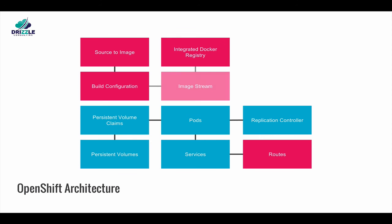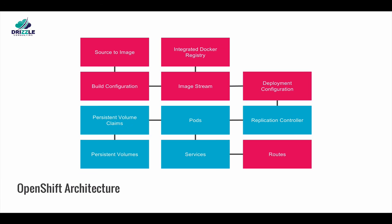OpenShift tracks images through the image stream component. The deployment configuration defines the template for the pod and manages the deployment of new images or configuration changes. Think of a deployment configuration as a single microservice. The replication controller will then manage the pods and keep them running.